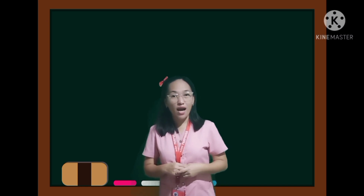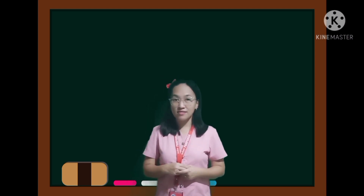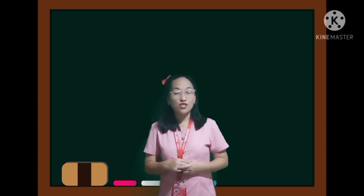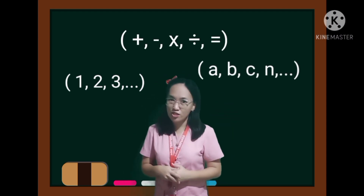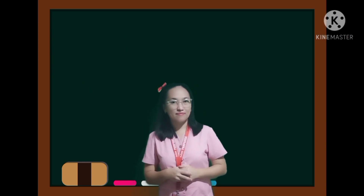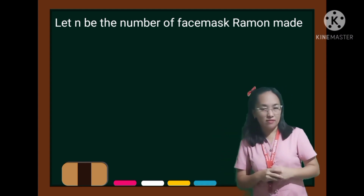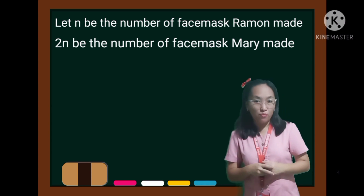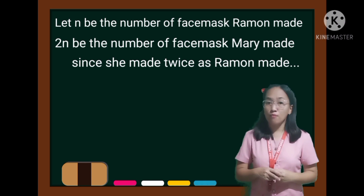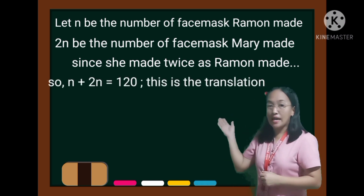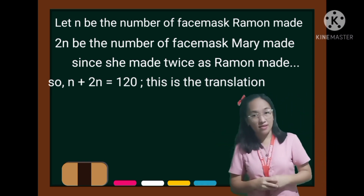To teach them how to solve the word problem, we need to change the word phrase into a mathematical sentence. Let us use numbers, letters, and symbols to represent the number of face masks made. Let N be the number of face masks Ramon made, and 2N be the number of face masks Mary made. Since she made twice as many as Ramon, N plus 2N equals 120. And this is the translation.